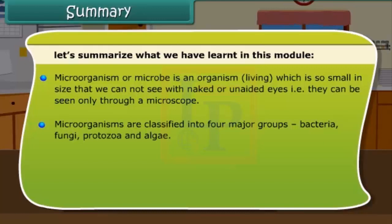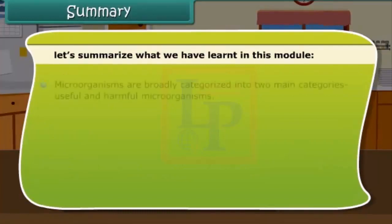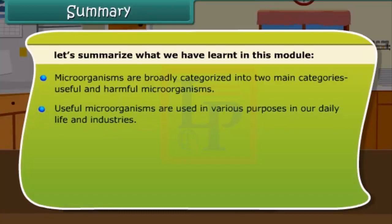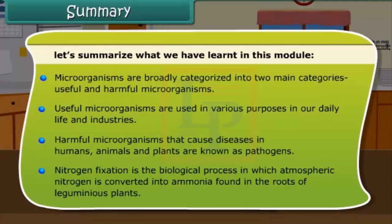Summary: Bacteria, fungi, protozoa and algae are the major groups of microorganisms. Microorganisms can survive in different environmental conditions like water, soil, hot springs and mountains. Microorganisms are broadly categorized into two main categories: useful and harmful microorganisms. Useful microorganisms are used for various purposes in our daily life and industries. Harmful microorganisms that cause diseases in humans, animals and plants are known as pathogens. Nitrogen fixation is the biological process in which atmospheric nitrogen is converted into ammonia, found in the roots of leguminous plants.